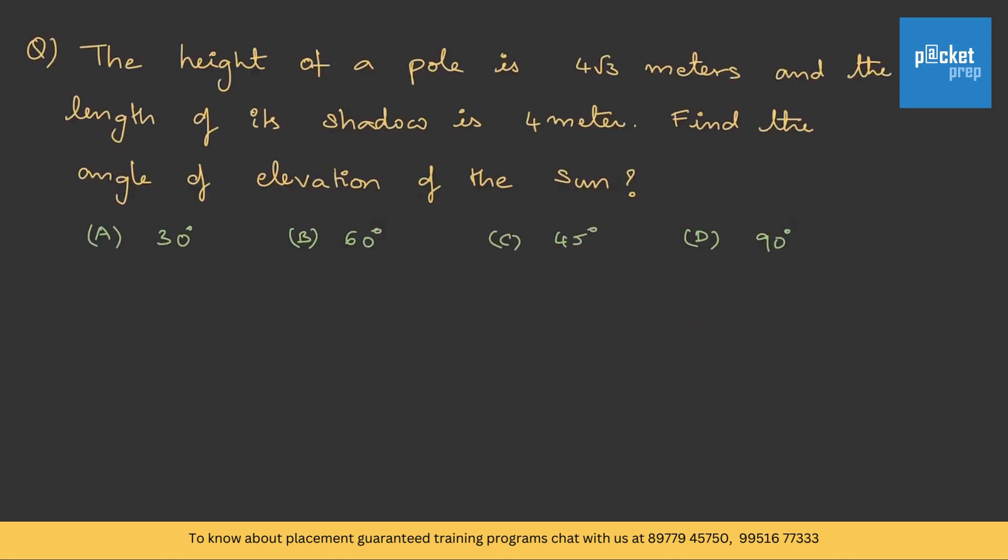The height of a pole is 4 root 3 meters and the length of the shadow is 4 meters. Find the angle of elevation of the sun. Basically, they are saying there is a pole and there is sun. Because of the sun, there is a shadow on the ground. We need to find the angle. Let me draw the diagram.